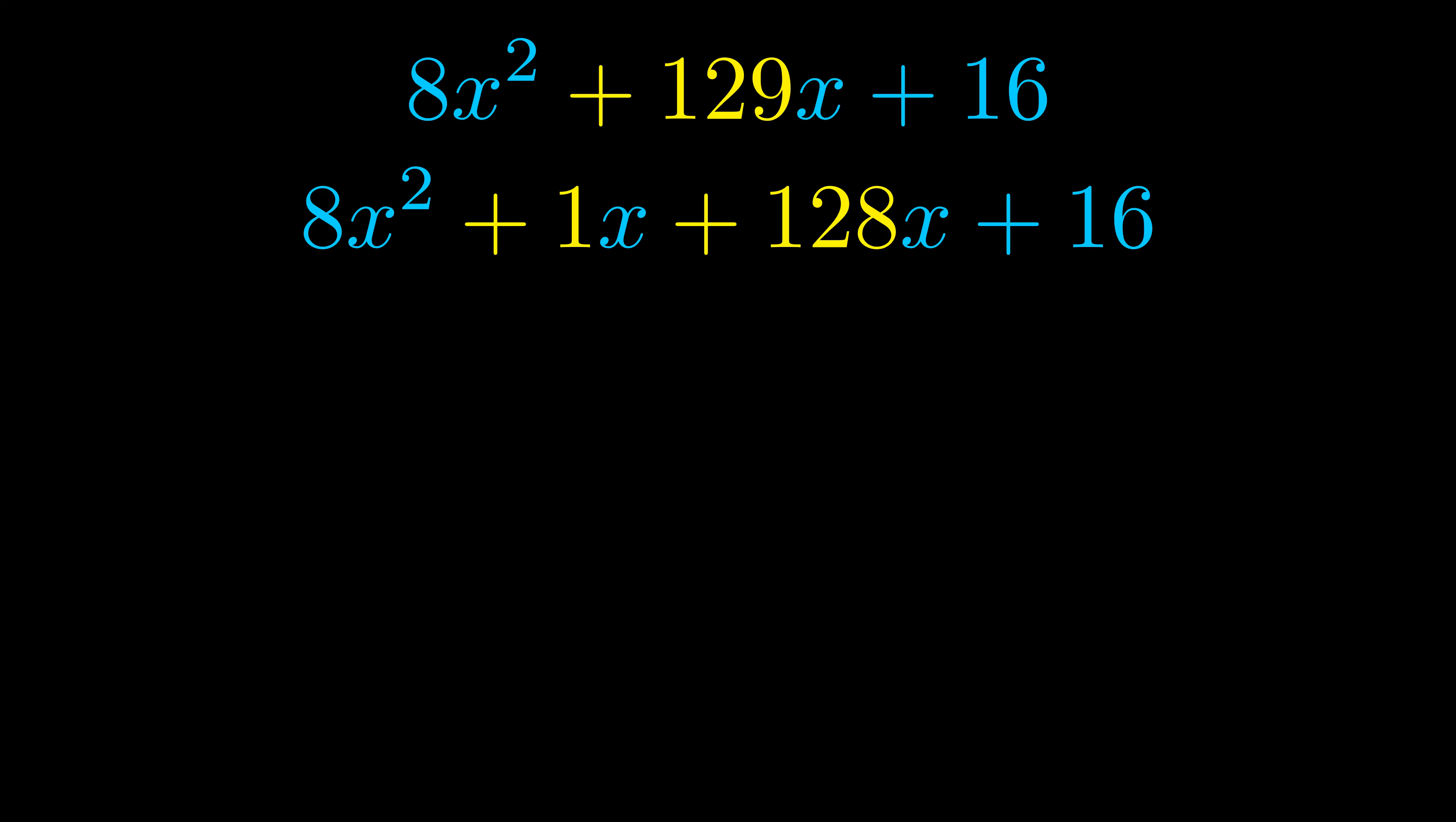Once we've done this, we go ahead and put parentheses around the first term and the last term so that we can take the greatest common factor out of both terms. We can see the greatest common factor is now outside in green.